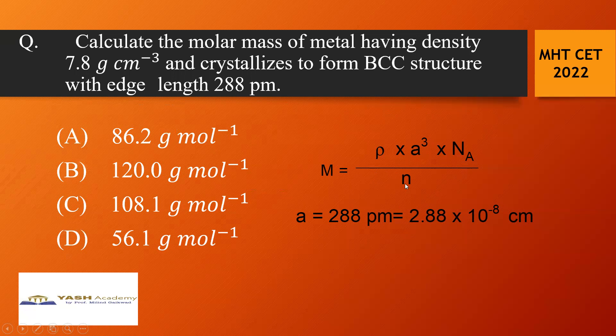Here BCC structure n is equal to 2. Density is given, a you have to convert this 288 picometer into centimeter. So 2.88 into 10 raised to minus 8 centimeter. And if you calculate this value we'll get the final answer D that is 56.1 gram per mole.